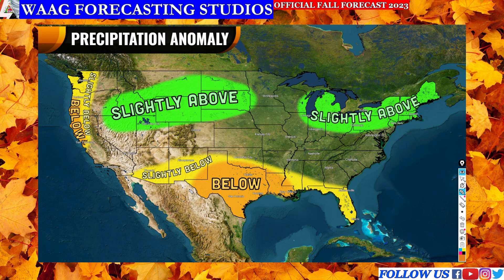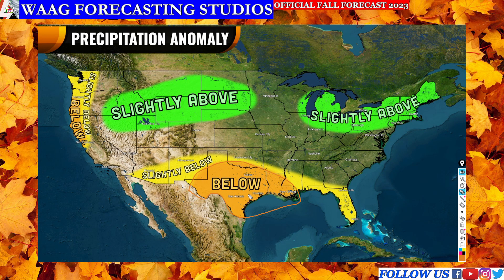Moving into the more extreme below average region, starting down in Texas. We've been seeing a lot of below average precipitation — the ridging setup has been blocking storms and rainy conditions from entering the Texas-Louisiana area, and a drought has been persisting for a couple of years. With a higher pressure ridge developing throughout the south, it's deflecting what we'd typically see with El Niño because not enough moisture can get down there. This likely will change as we move toward winter, but for now I'm still expecting below average precipitation.